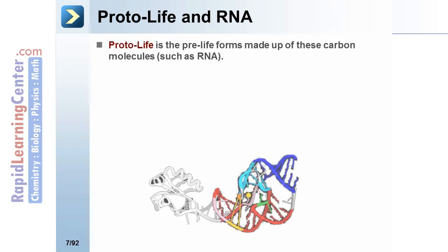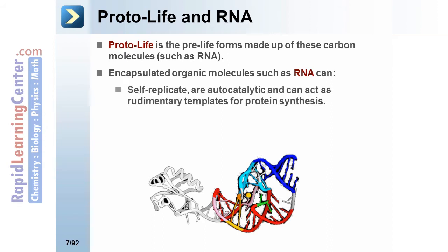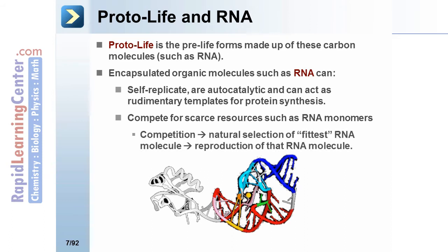Protolife refers to pre-life forms made up of carbon molecules such as RNA. Encapsulated organic molecules such as RNA can self-replicate, are autocatalytic, and can act as rudimentary templates for protein synthesis. They can compete for scarce resources such as RNA monomers, and this competition leads to natural selection of the fittest RNA molecule, which can then lead to reproduction of that specific RNA molecule.